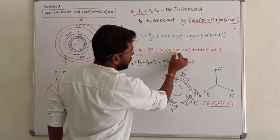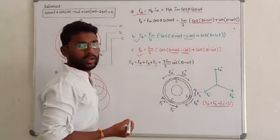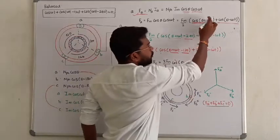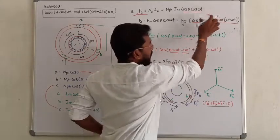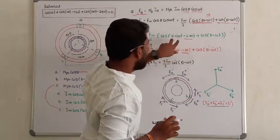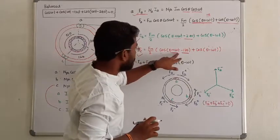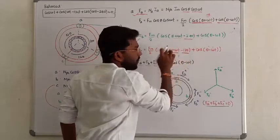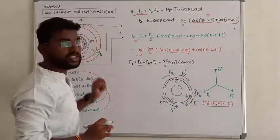We arrive at a term cos(θ + ωt − 120). Now, what is the conclusion? Let me denote θ + ωt in general. That gives us: cos(θ + ωt + 0), cos(θ + ωt − 240), cos(θ + ωt − 120). If we add these three quantities, the resultant is going to be zero.